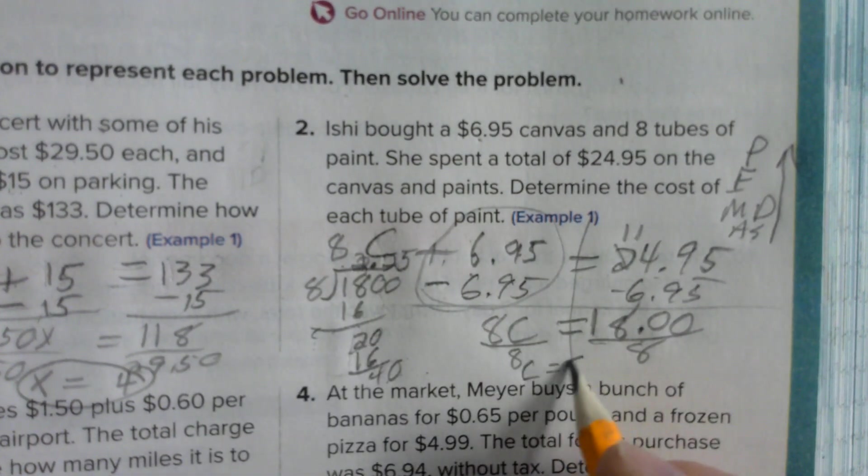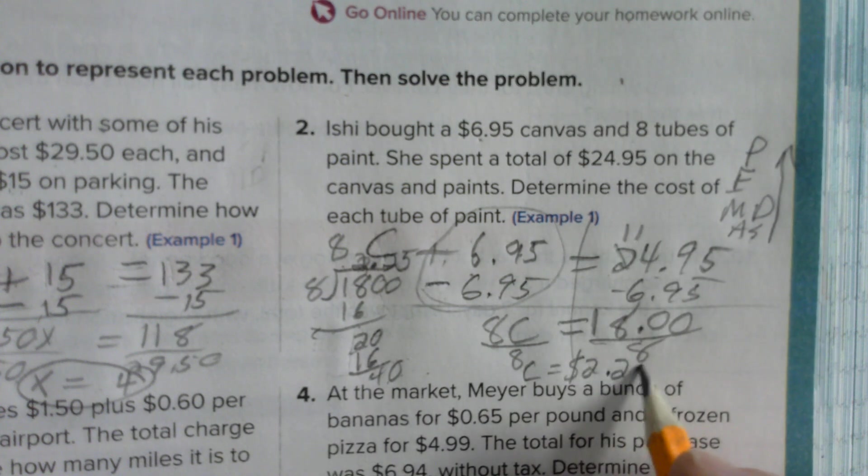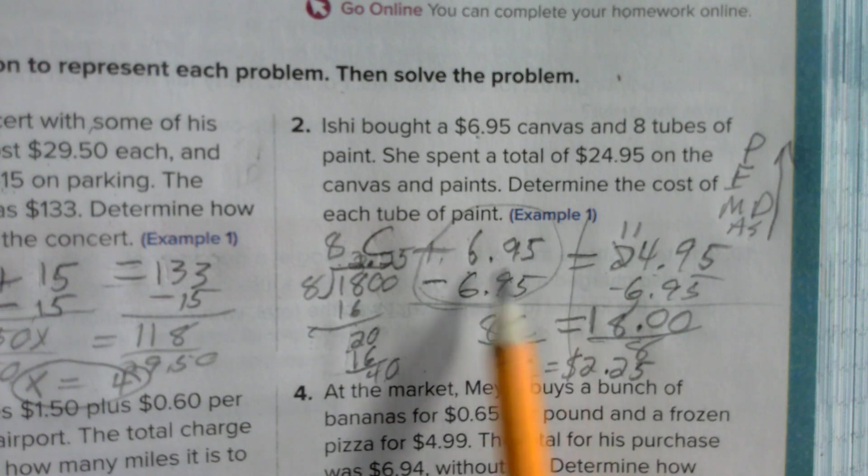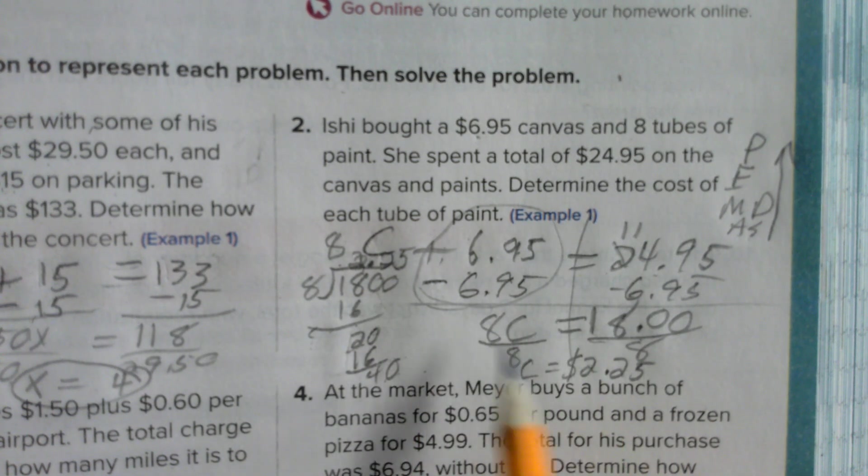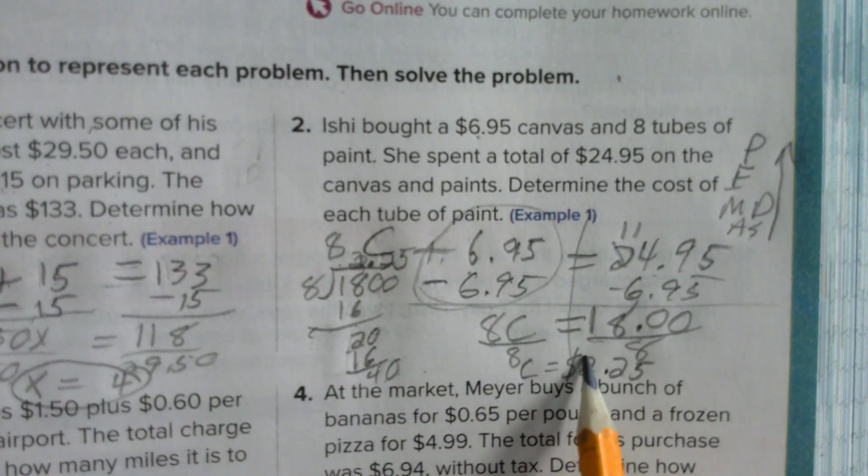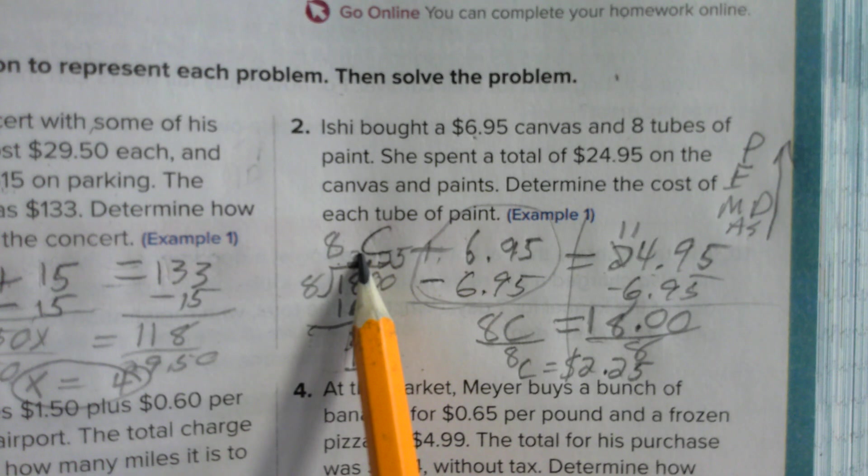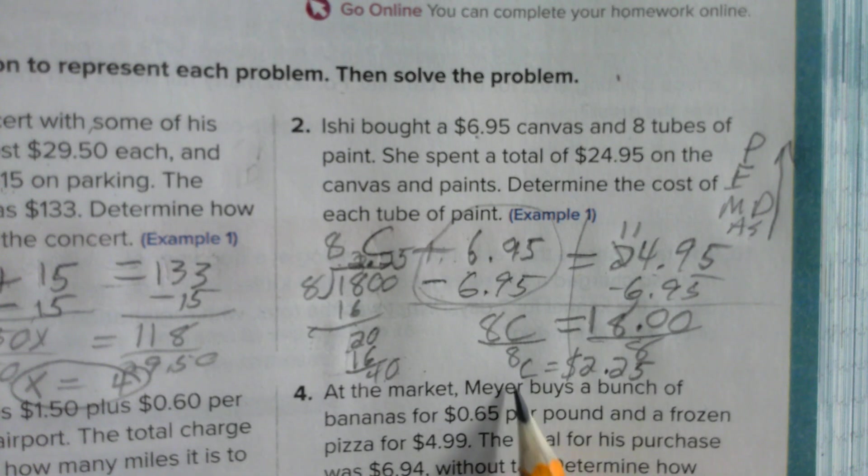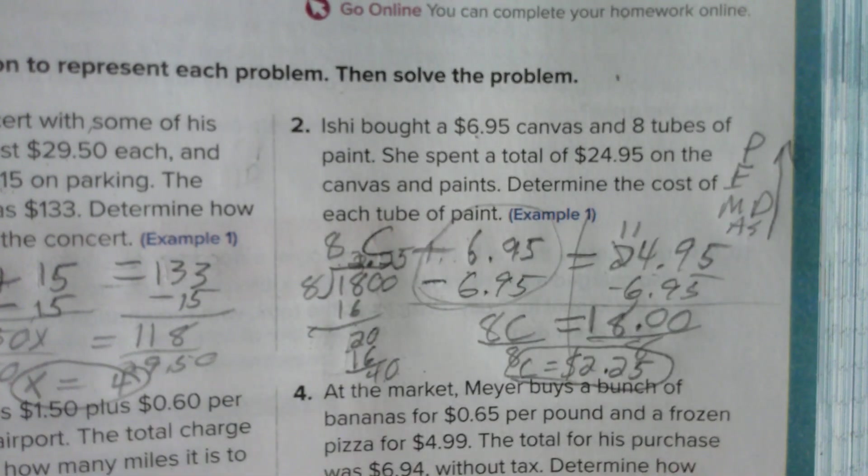C equals 2.25. What does that mean? It means that each tube of paint costs $2.25. And the way to check that is if you take 8 times 2.25, that gives you $18, and you add 18 and 6.95, you get 24.95, which is correct. So C equals 2.25 is my final answer.